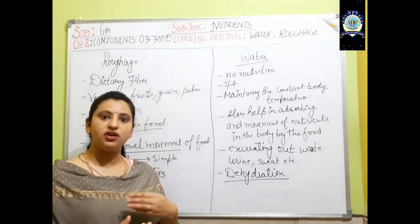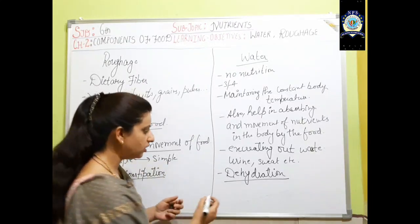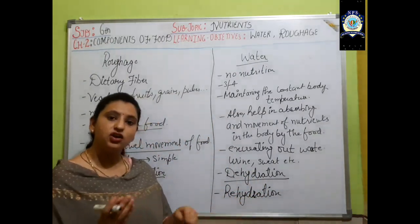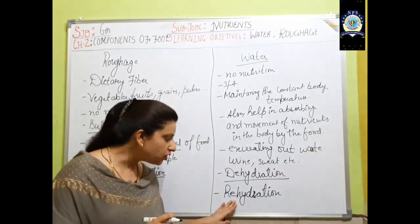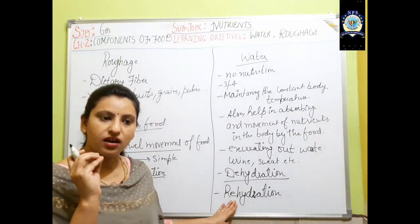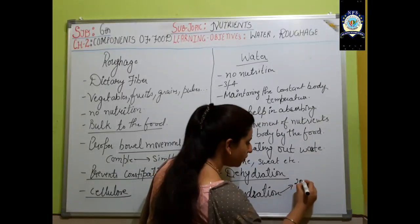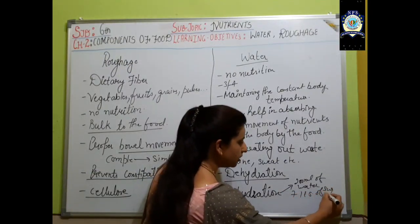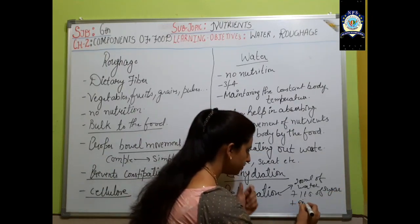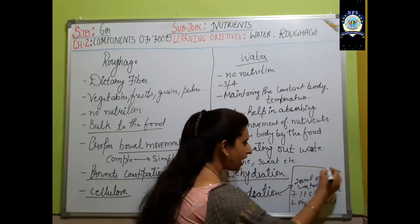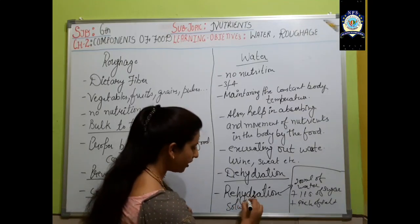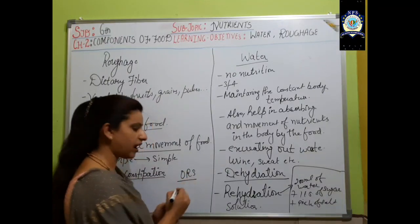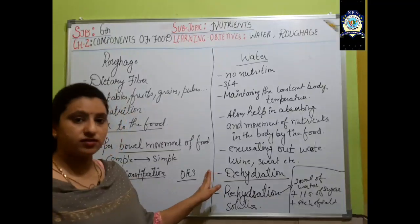To treat diarrhea and loose motion conditions, we can go for rehydration. Rehydration means adding more water back into the body. A simple home remedy: take 200 ml of water, add 1 teaspoon of sugar and a pinch of salt — and your rehydration solution is ready. Doctors also recommend this as ORS — Oral Rehydration Solution. This is all about water as the essential life liquid.